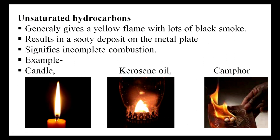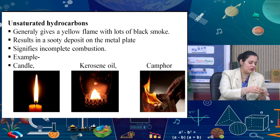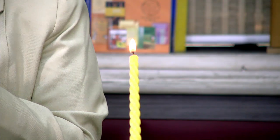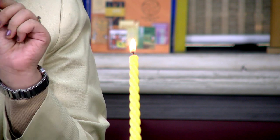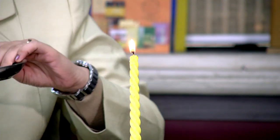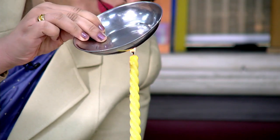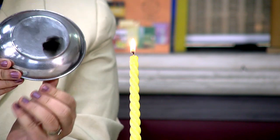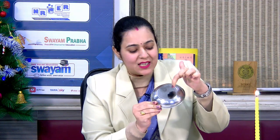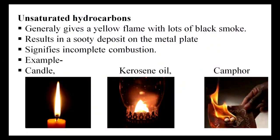A live demonstration: a candle is lit. You can clearly see a yellow flame — this is an example of incomplete combustion. Notice the black sooty flame coming out. A metal plate is placed over it, and the black carbon deposit is clearly visible. This black carbon deposit is unburnt carbon — a case of incomplete combustion.